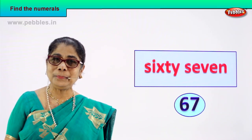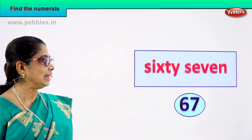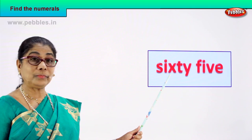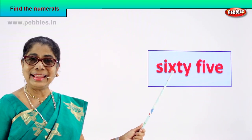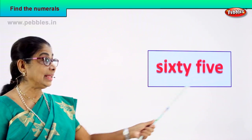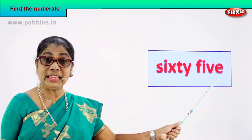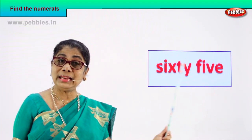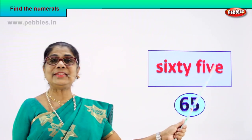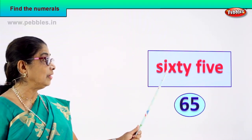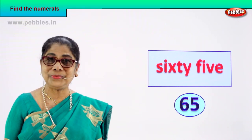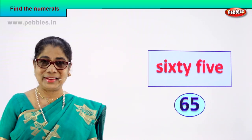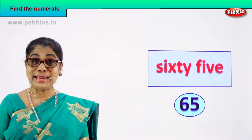Let's take another numeral. You like the exercise? Look at the next number. Let's find the next numeral. Read aloud: S-I-X-T-Y, sixty, F-I-V-E, five — sixty-five. How do you write the numeral? Six and five — sixty-five. Very good. Six and five — sixty-five. So you learn to write the numeral for the number name: six and five, sixty-five. Shall we take another number name?